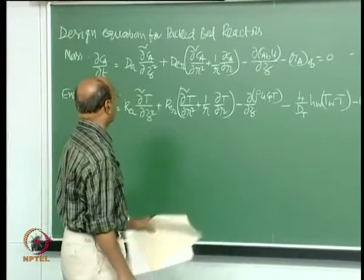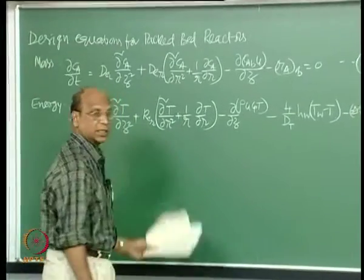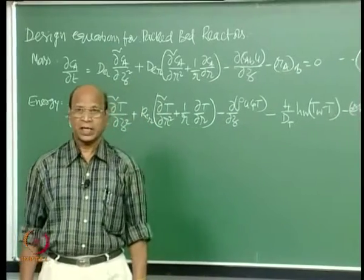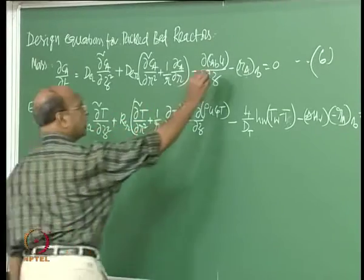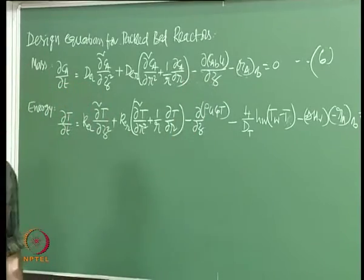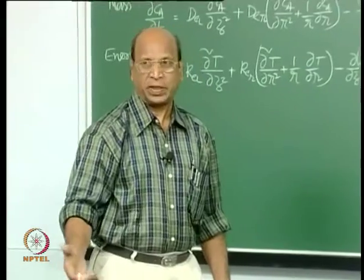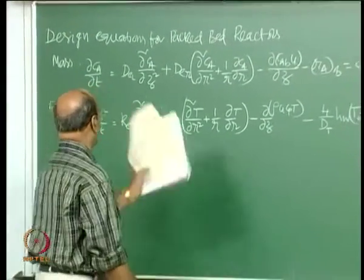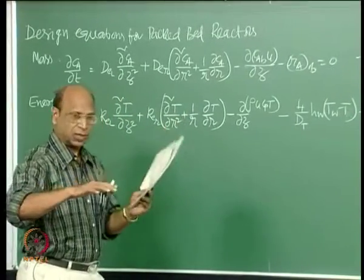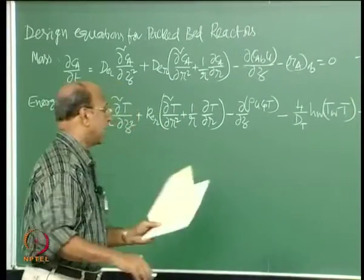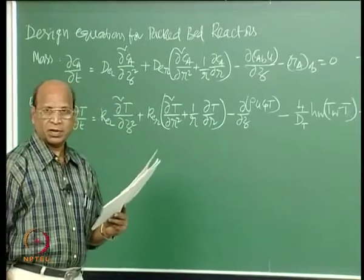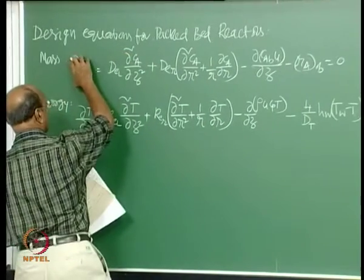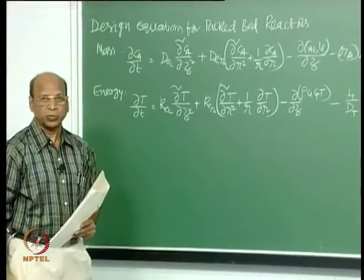In ideal plug flow, what we do is we block the accumulation, axial dispersion, and radial dispersion terms — steady state — and then you will have only these two: convection and reaction. That is why if you say flat velocity profile, this velocity u is the same across any cross section. But the moment you imagine that you have some kind of axial mixing, and radial uniformity is assumed, it goes like this.